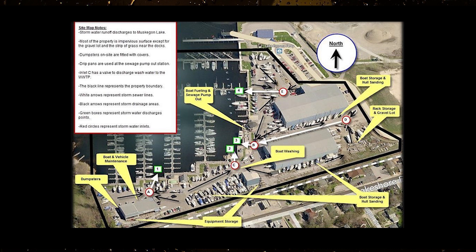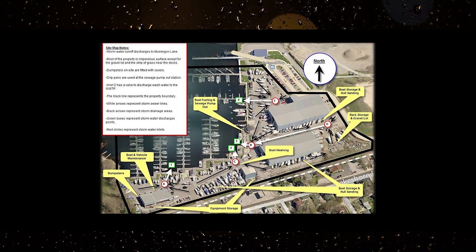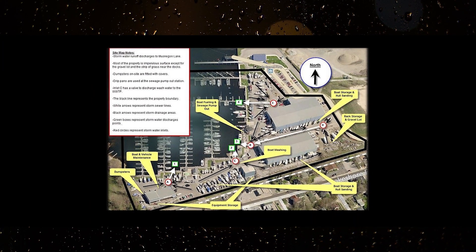Location of NPDES permitted discharges other than stormwater. Outlines of drainage areas contributing to each discharge point. Structural runoff controls and stormwater treatment facilities. Areas of vegetation. Areas of exposed and/or erodible soils. Impervious surfaces. Name and location of receiving waters. And areas of known or suspected impacts on surface waters as designated under Part 201 of the Michigan Act.